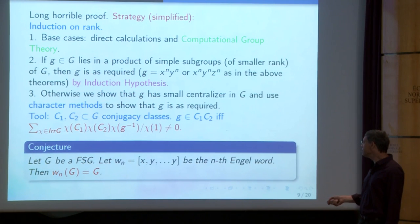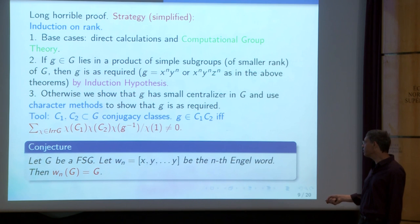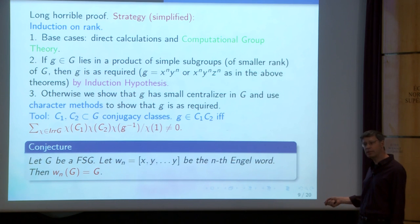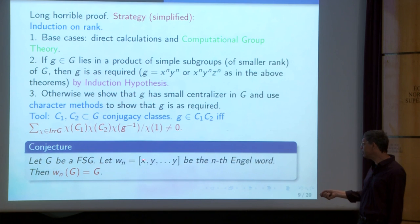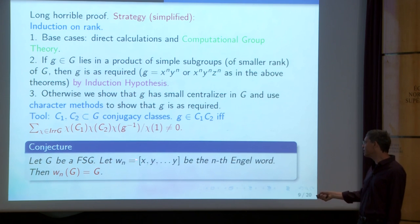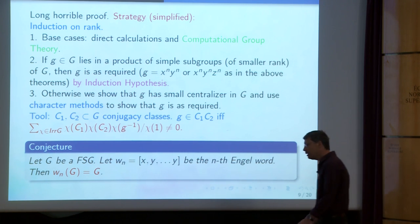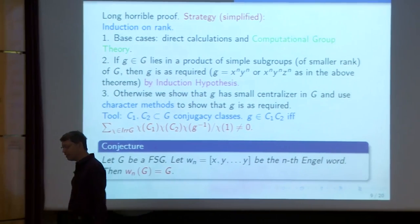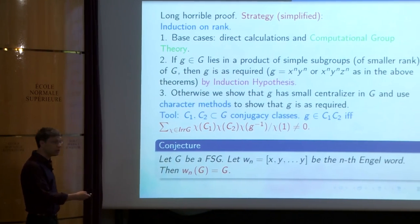Philosophically, there is a theorem of Zorn: if you have a finite group satisfying an Engel identity where the word is always one, then it's nilpotent. Finite non-abelian simple groups are the opposite of nilpotent groups. And the opposite of the word being always one is that it's actually surjective. So philosophically it makes sense. There is very compelling evidence and I'm really sure it's true, but it's still a challenge.